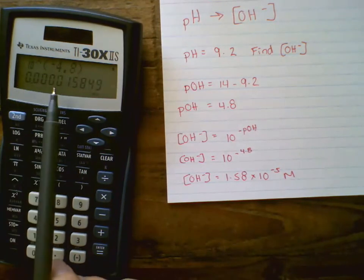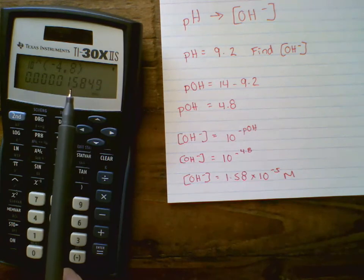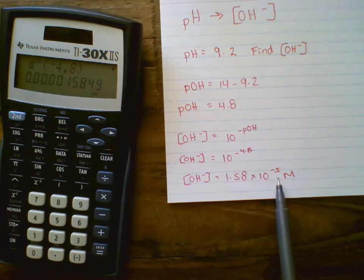So again, I'm counting over 1, 2, 3, 4, 5. Put my decimal point in between the 1 and the 5 and then it's times 10 to the negative 5th.